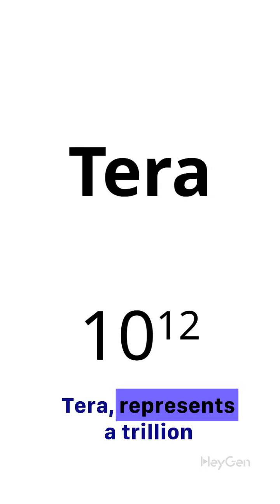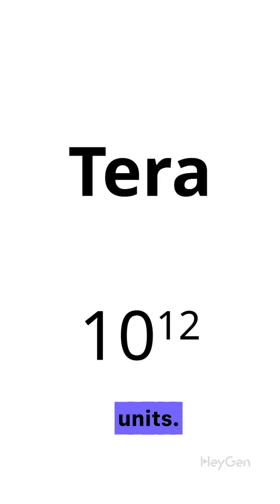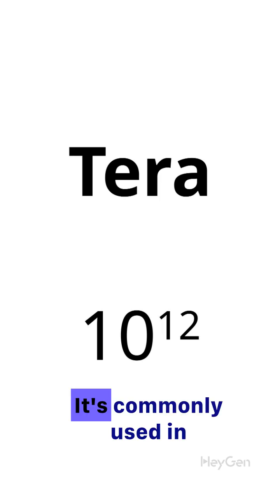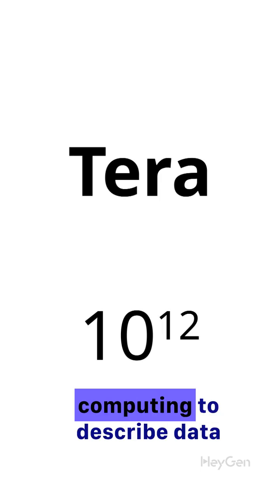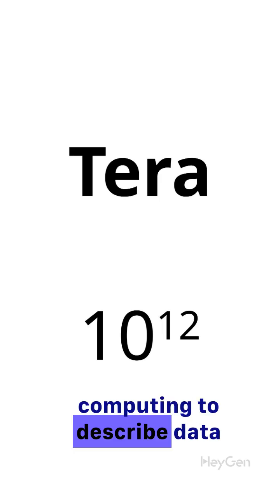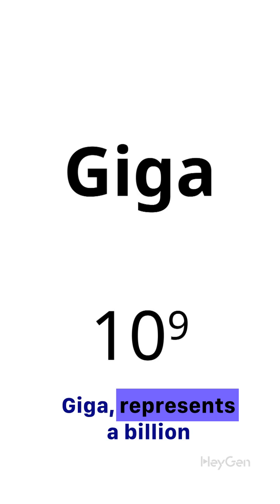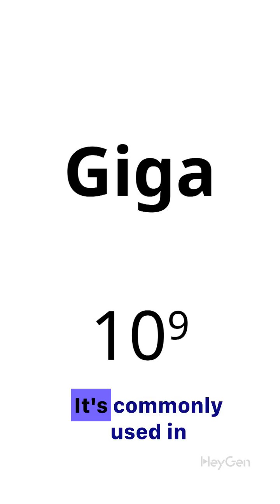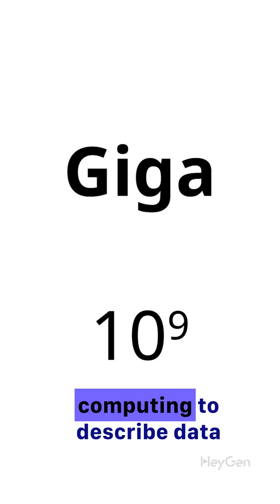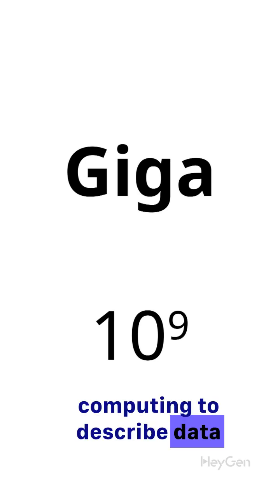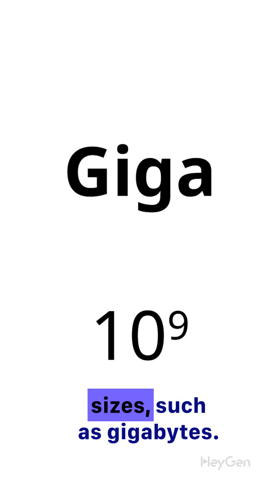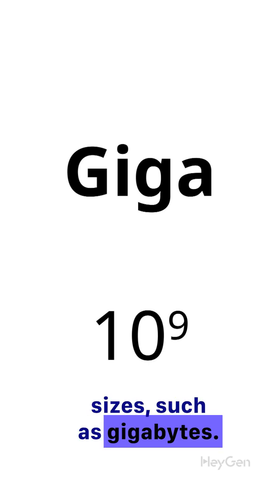Tera represents a trillion units. It's commonly used in computing to describe data storage. Giga represents a billion units. It's commonly used in computing to describe data sizes, such as gigabytes.